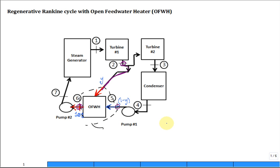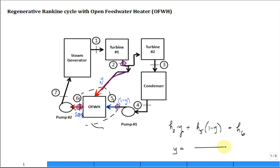We did that last time. When you do the energy balance, you have enthalpy 2 times Y plus enthalpy 5 times (1 minus Y) equal to 100% times H6. So that gives you an equation for Y. The purpose of this, for the regenerative vapor power cycle, is to increase the temperature of the feed water going into the steam generator.